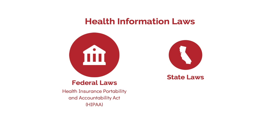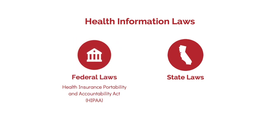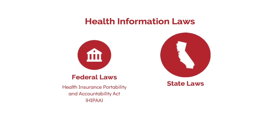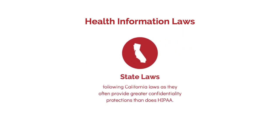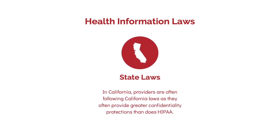In addition to HIPAA, there are other federal laws that protect certain types of medical or mental health information, based on, for example, a funding stream or the type of services provided. In California, there are confidentiality laws such as the Confidentiality of Medical Information Act, which covers most health records and some mental health records, and the Lanterman-Petris-Short Act, which covers certain mental health records. Even though we tend to refer to HIPAA, in California, providers are often following California laws because they provide greater confidentiality protections than HIPAA. For this reason, the rules that health care providers follow in California may look a little different than in other states.